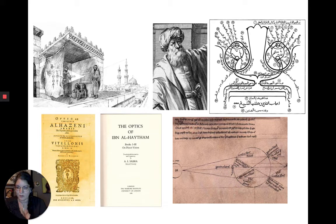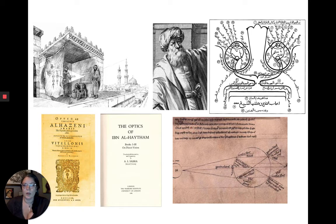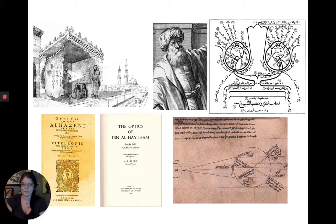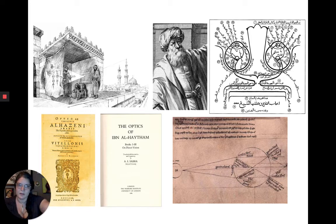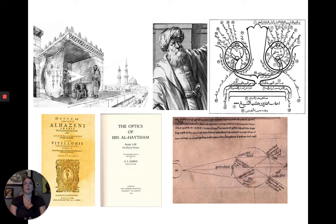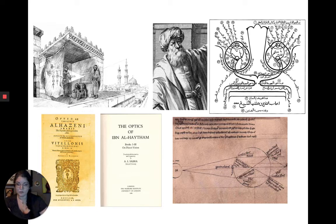Moving forward a bit, over in the Middle East we have Alhazen — a philosopher, scientist, and inventor who comes up with most of the theories related to modern optics. He's not just talking about camera obscura and pinhole photography; he's also looking at how our eyes work and how they perceive optics. He publishes works explaining how the human eye functions as a lens, and he's really the first person to figure out the role lenses eventually play in photography.